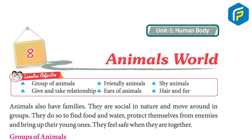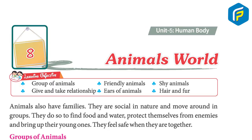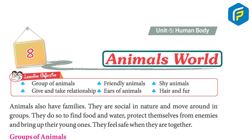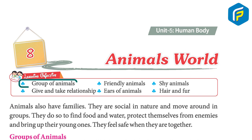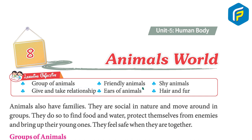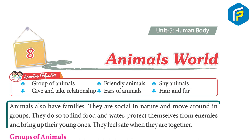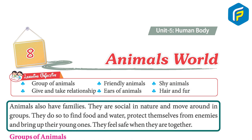Unit 5, Human Body, Chapter 8: Animals World. Learning objectives include groups of animals, friendly animals, shy animals, give-and-take relationships, and ears of animals. Animals also have families — they are social in nature and move around in groups. They do so to find food and water, protect themselves from enemies, and bring up their young ones. They feel safe when they are together.